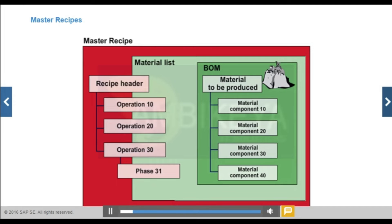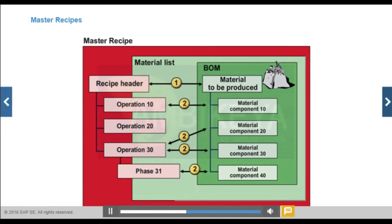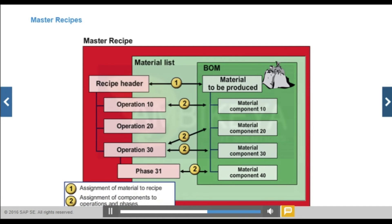The process industry uses a master recipe instead of a routing. The production version in the material master defines a fixed and unique link between an alternative of the recipe group and an alternative of a multiple BOM. You can include the master recipe in customizing for quantity structure control to access it in the cost estimate; however, this can be overridden in the material master or on the costing request screen.